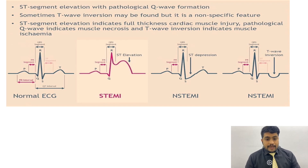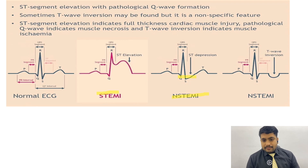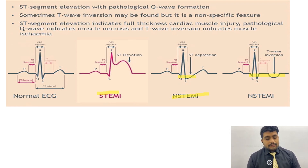Here is a comparison between STEMI and NSTEMI. This is our normal ECG, this is our ST segment elevation, this is our ST segment depression, and this is our inverted T wave. As we know, the criteria for ST elevation is that the elevation should be at least two small blocks.